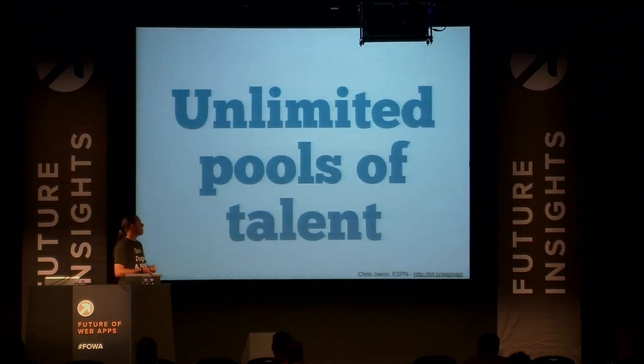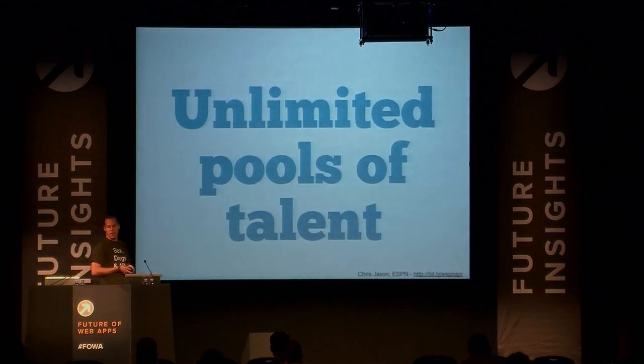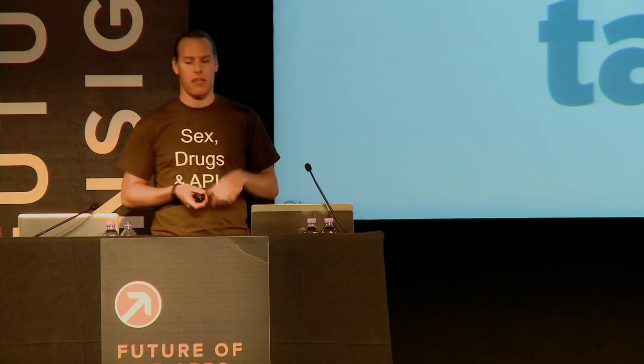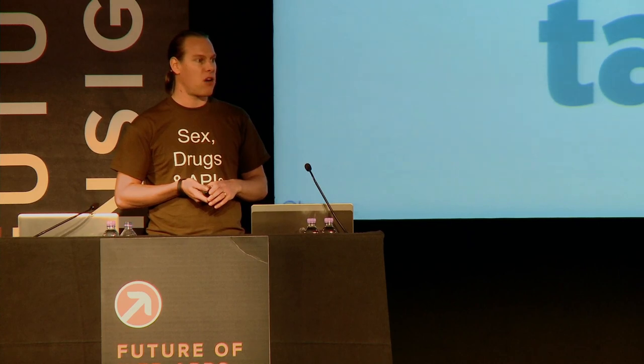Another advantage of open APIs is it gives you unlimited pools of talent. Chris Jason, the API director of ESPN, spoke about this — when ESPN built their API, they had about 16 developers internally. But when they opened it up, within a few months they had about 50 partners, each with their own development teams, moving from 16 developers to hundreds. These hundreds of developers weren't on their payroll — people were building applications for the Microsoft Surface, Samsung smart televisions — an unlimited pool of talent that wasn't on their payroll but was putting ESPN in front of the customer.